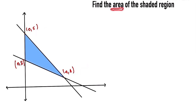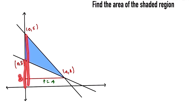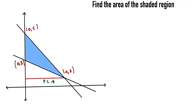We draw a line joining the points. The height h of this triangle is equal to 4. For the base, the two y-intercepts are at y equal to 3 and y equal to 5, so the base length is 5 minus 3, which equals 2. This side is the height and this side is the base.